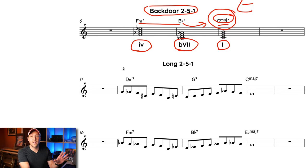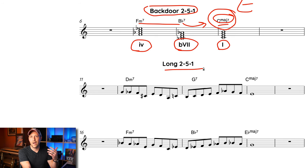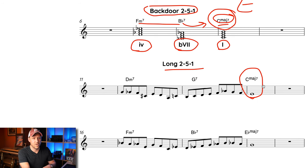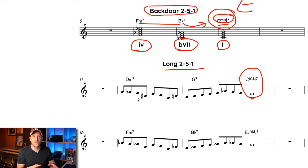Let's break it down. First I'll play a long two-five-one in C major — meaning a measure of the two chord, a measure of the five chord, then resolve. For all of these I'm going to resolve on the third of the one chord because it's very stable and it always works. So here's what a regular major two-five-one in C major sounds like.